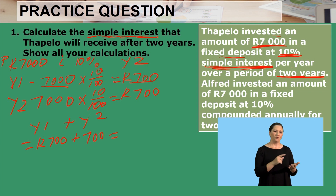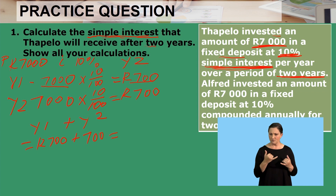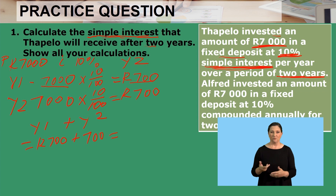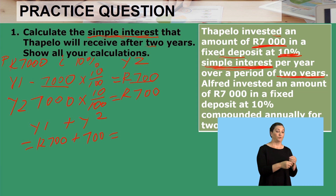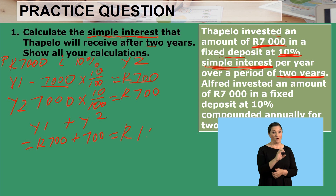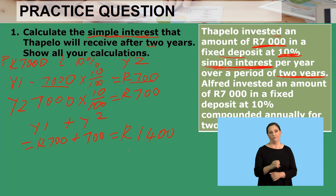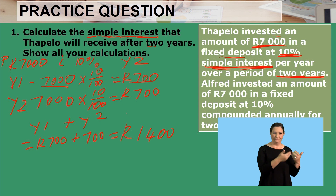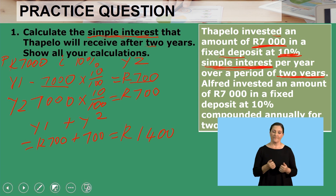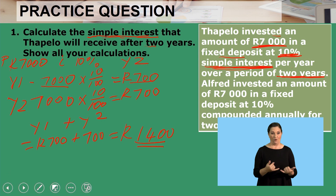We are calculating only the simple interest that TAPELO will receive — not the interest plus the principal amount. So the final answer is 1,400, because 700 times 2 equals 1,400. We have shown all our calculations. This is the final answer for question one.